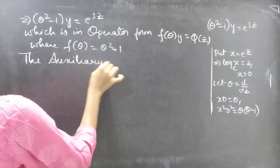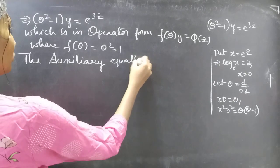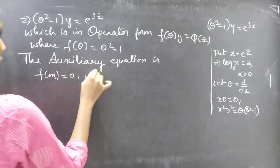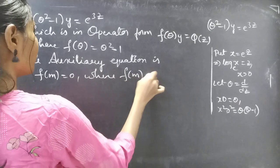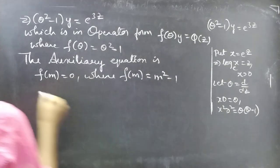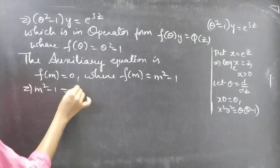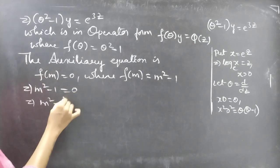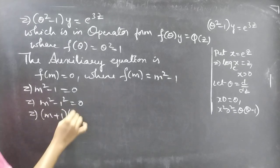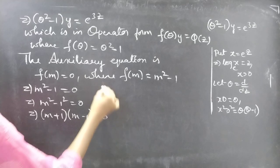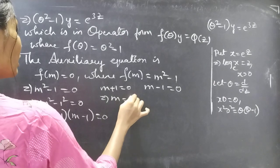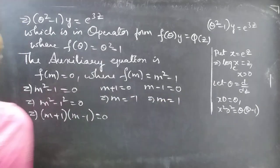The auxiliary equation is f(m) = 0. We have f(θ) = θ² − 1, so replacing θ by m gives f(m) = m² − 1. The auxiliary equation becomes m² − 1 = 0, which is of the form a² − b² = (a+b)(a−b). So (m+1)(m−1) = 0. From m + 1 = 0, m = −1; and from m − 1 = 0, m = 1.